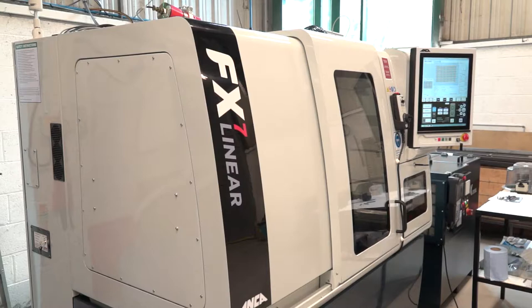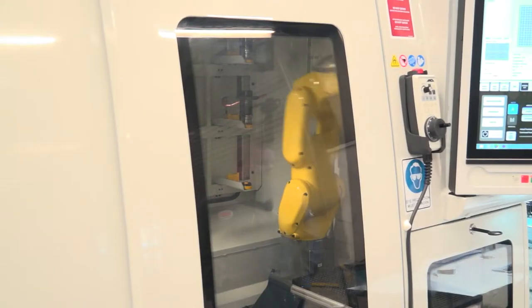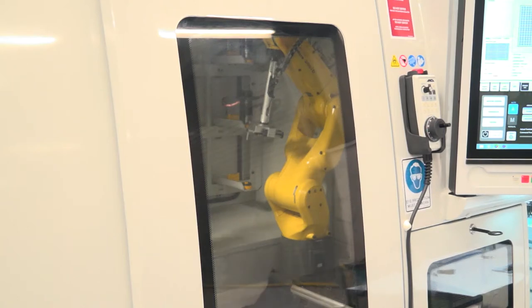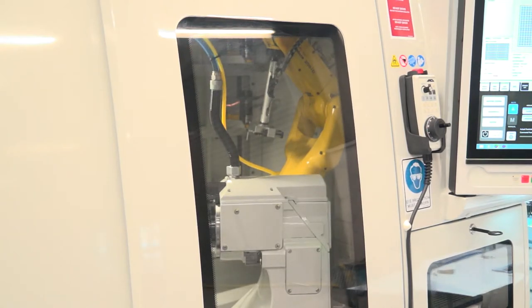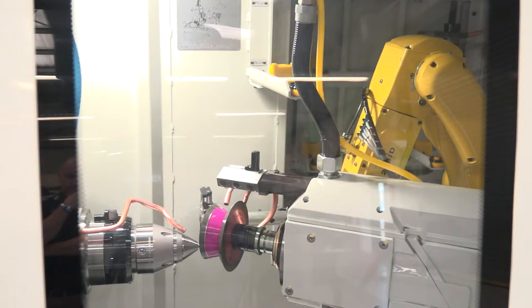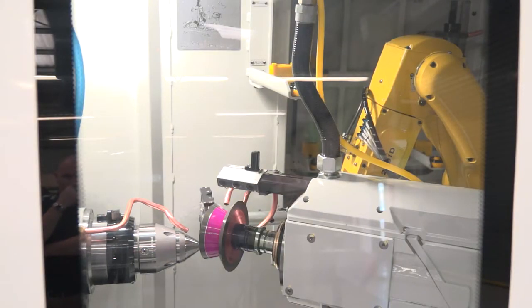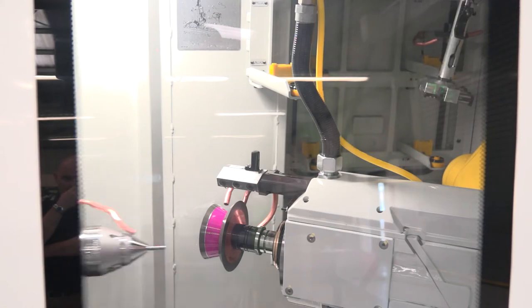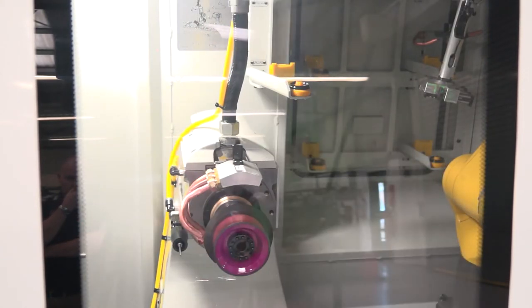And you've just purchased an FX7 linear. Why did you go for this machine from Anker? Predominantly because of the robot loading, we can produce large batches of tools and then hopefully work lights out. And with the linear motors, we found that the surface finish on the tools was far superior.